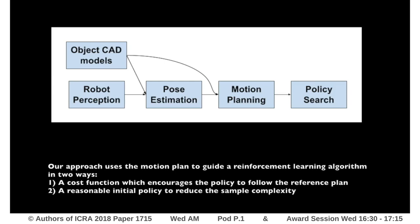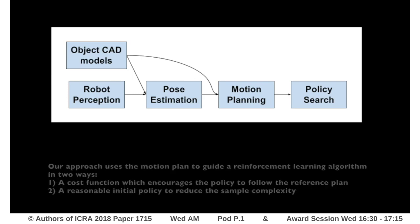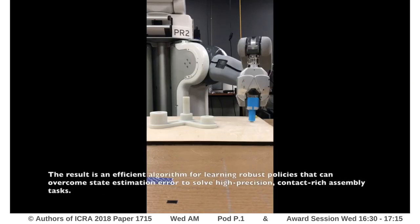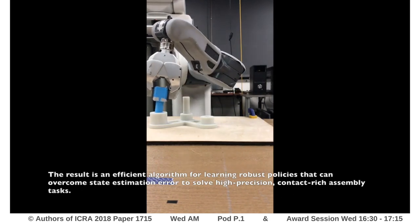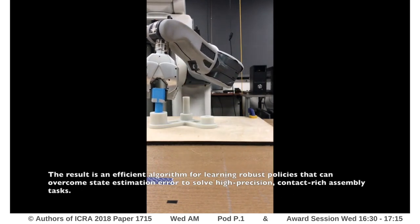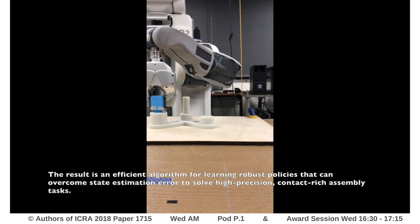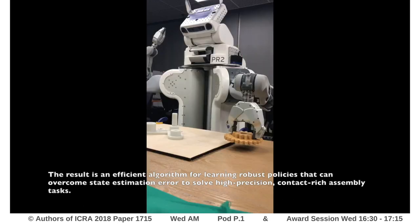Our approach uses the motion plan to guide a reinforcement learning algorithm in two ways. First, a cost function is used to encourage the policy to follow the reference plan. Second, a reasonable initial policy reduces the sample complexity. The result is an efficient algorithm for learning robust policies that can overcome state estimation error to solve high precision, contact-rich assembly tasks.